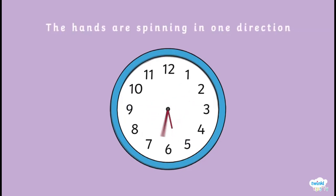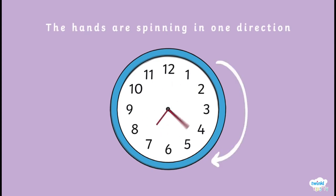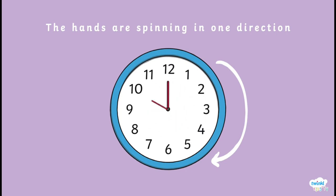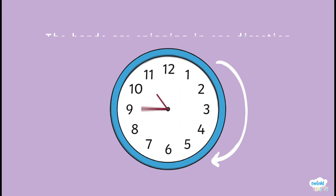The numbers on our clock face represent the hours. Look at the minute hand zoom around the clock — we've sped up how long it would usually take. You will notice that both hands are spinning in the same direction. We call this clockwise.